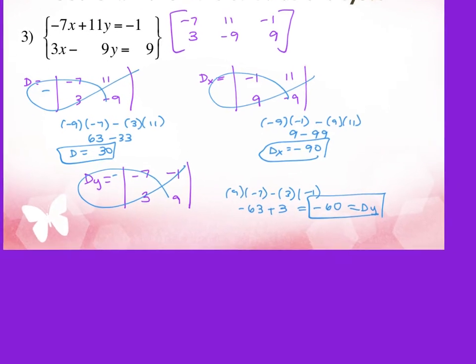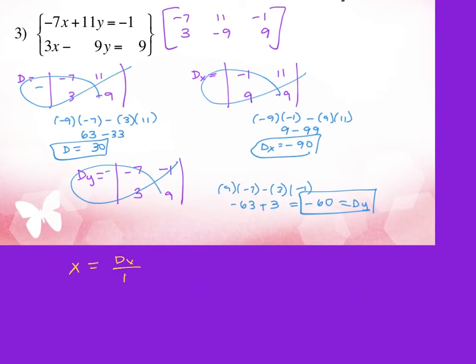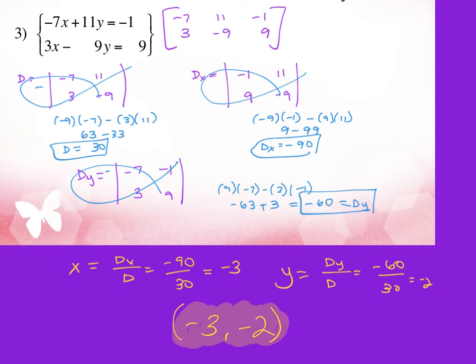So then I have to do x as Dx over D, negative 90 over 30, which is negative 3. And y as Dy over D, negative 60 over 30, which is negative 2. So the solution to this system will get typed in exactly like this on Canvas. But all the work is going to go on your answer sheet. So, again, you're going to get a space for D, for D sub x, for D sub y. And then you'll type in that ultimate answer into the box on Canvas.